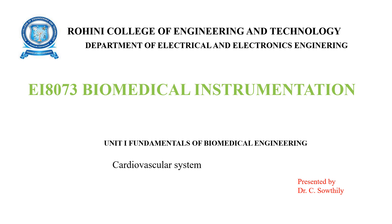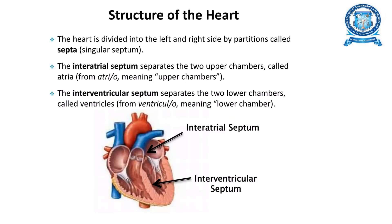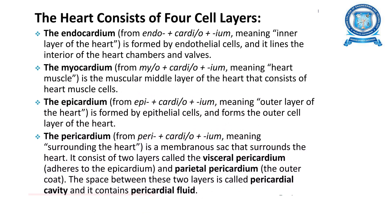We'll discuss the cardiovascular system — the structure and functioning of the heart. The heart is divided into left and right sides by partitions called septa: the interatrial septum separates the two upper chambers called atria, and the interventricular septum separates the two lower chambers called ventricles. The heart consists of four layers: endocardium, myocardium, epicardium, and pericardium.